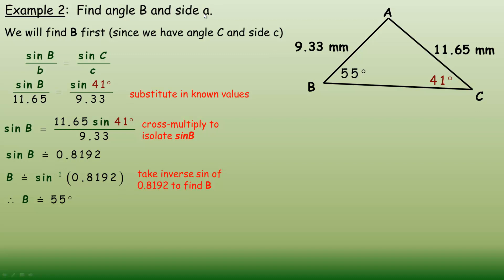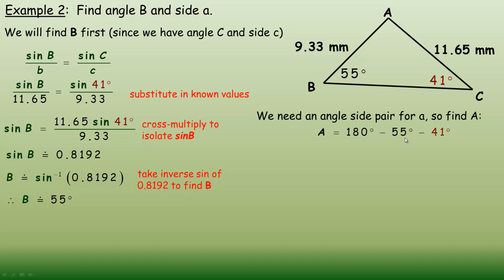Now we're asked to find side A. We found angle B first because we had the side across from it. Now we can find angle A by subtracting 55 and 41 from 180 — all three angles in a plane triangle add to 180 — giving angle A equals 84 degrees.